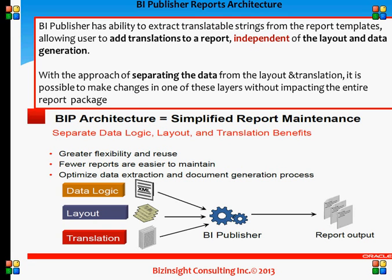For example, say we have a PO report with five languages — that means five different reports. If there's a requirement to add a new field, we have to modify all five reports. In BI Publisher, the architecture separates the data logic, layout, and translation layers. So if you need to add a new field that's already in the SQL query, you only change the layout — just one layout. You need not modify five reports. Because we have a separate layer for translation, a separate layer for layout, and a separate layer for data logic, just one layout is sufficient for five different languages.